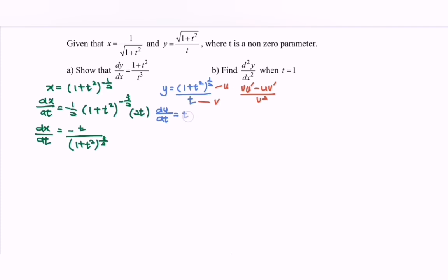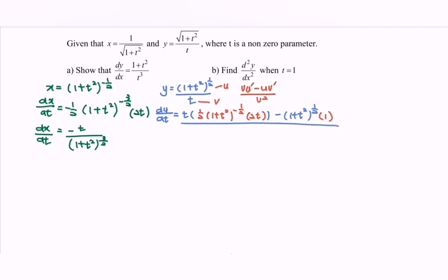For this part, we have t multiplied by the derivative of u: 1 over 2, bracket (1 plus t squared) to the power of negative 1 over 2, then differentiate the internal function to get 2t. Minus u, which is (1 plus t squared) to the power of 1 over 2, times the derivative of t which is 1. Over v squared, which is t squared.